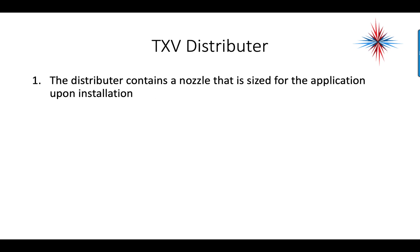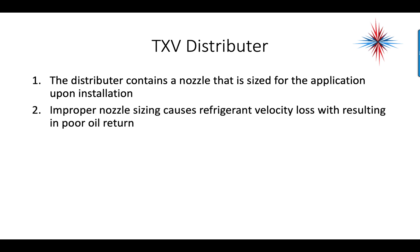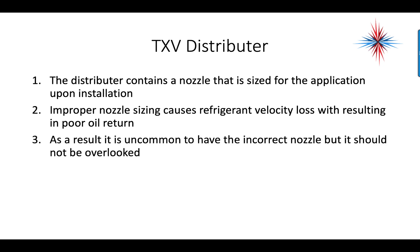TXV distributors can cause problems as well. The distributor contains a nozzle that is sized for the application upon installation. Improper nozzle sizing causes refrigerant velocity loss that results in poor oil return. It's uncommon to have the incorrect nozzle, but it should not be overlooked.